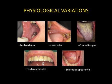Fordyce granules, which represent ectopic sebaceous glands; and sclerosis, most commonly secondary to laser treatment of the oral mucosa.